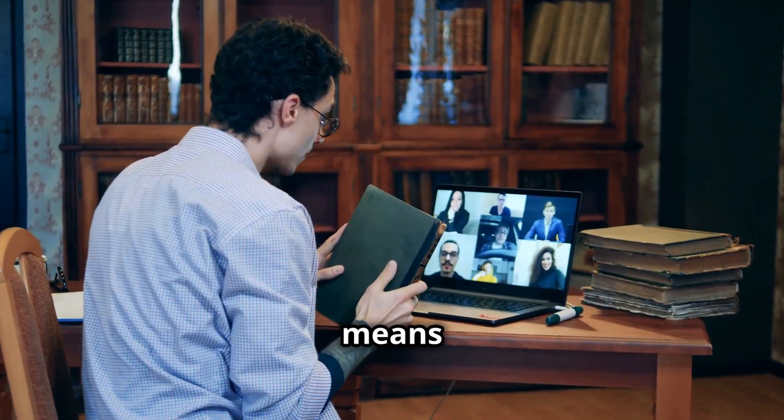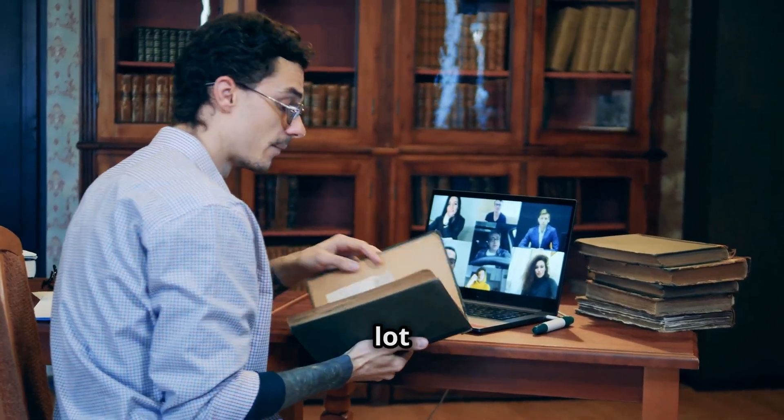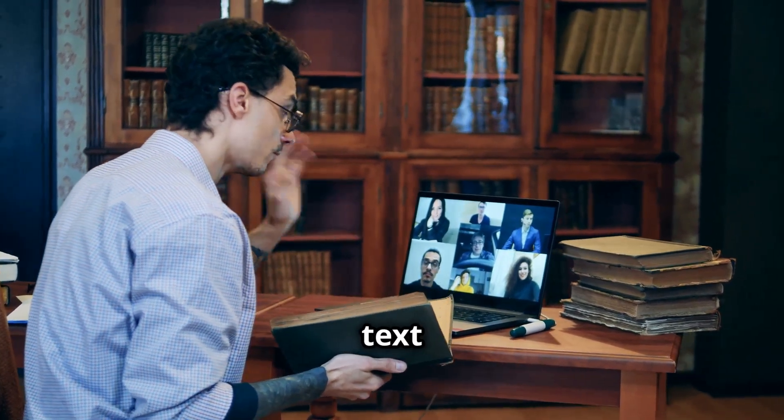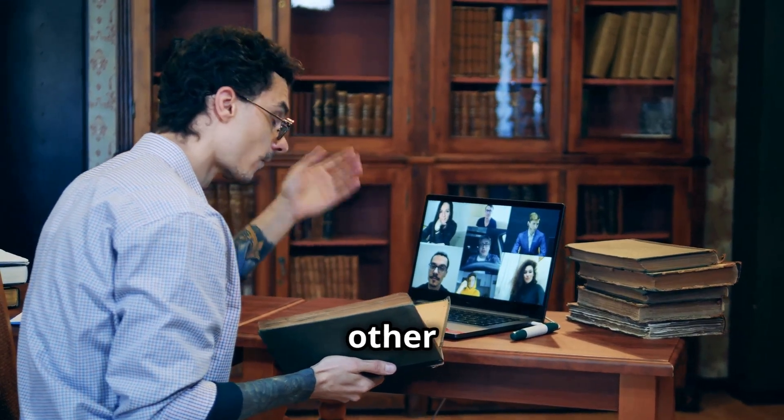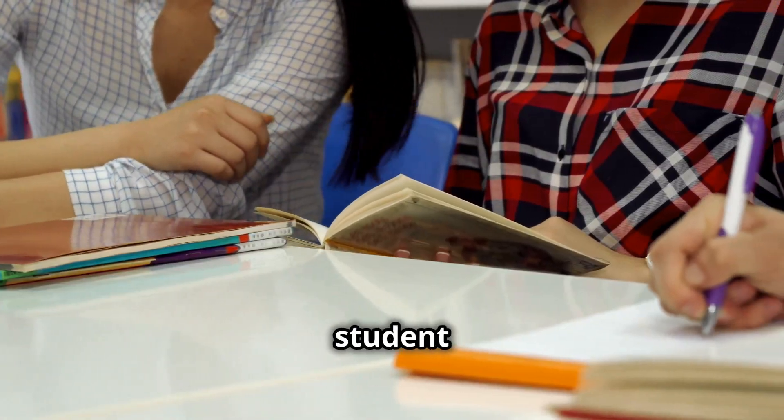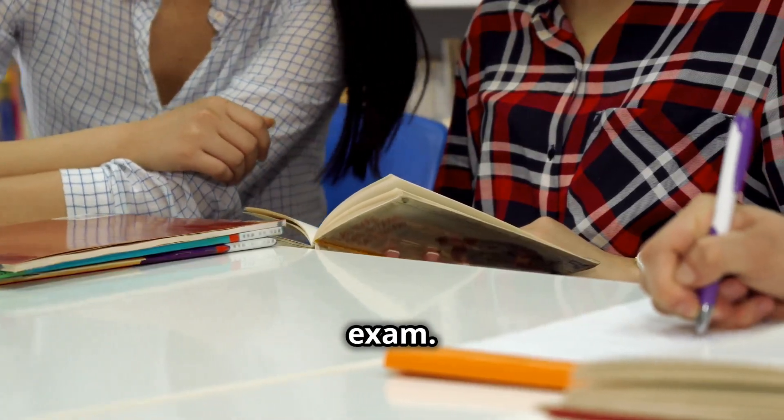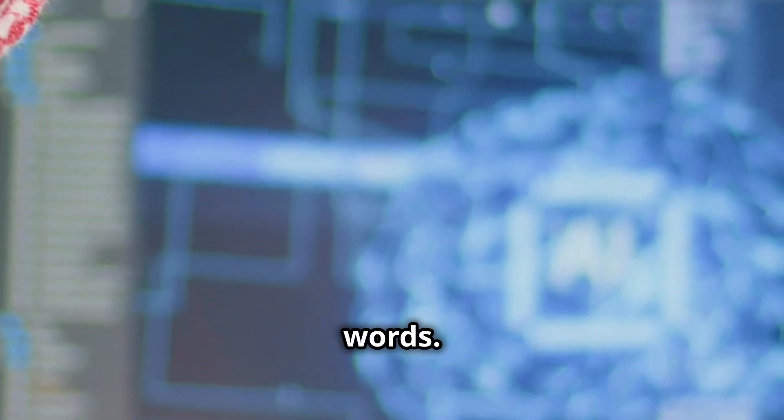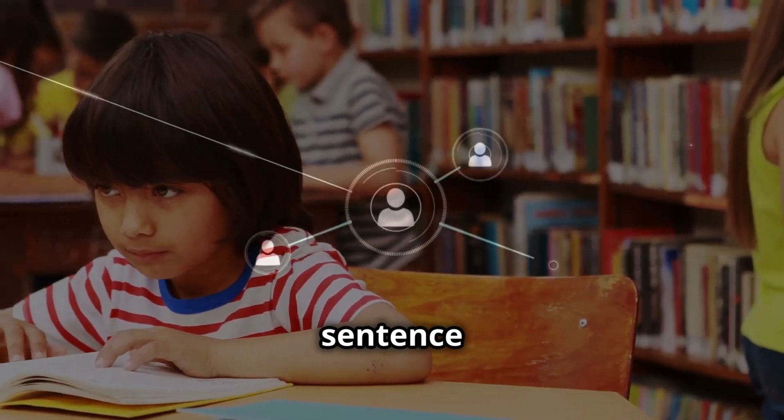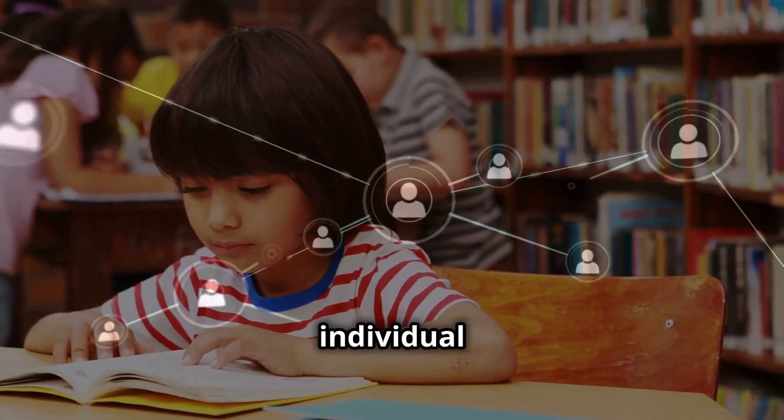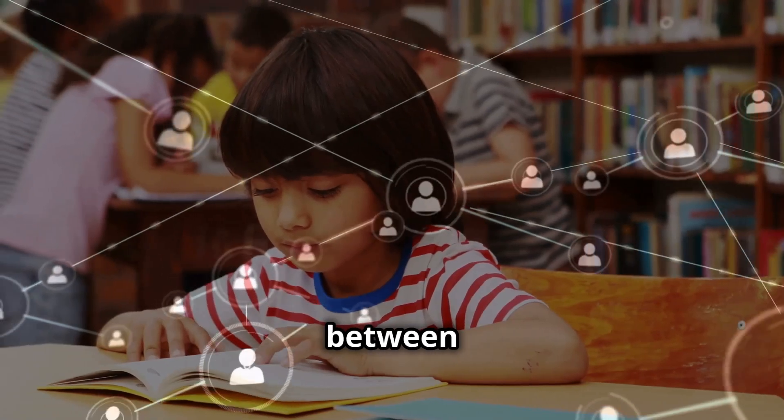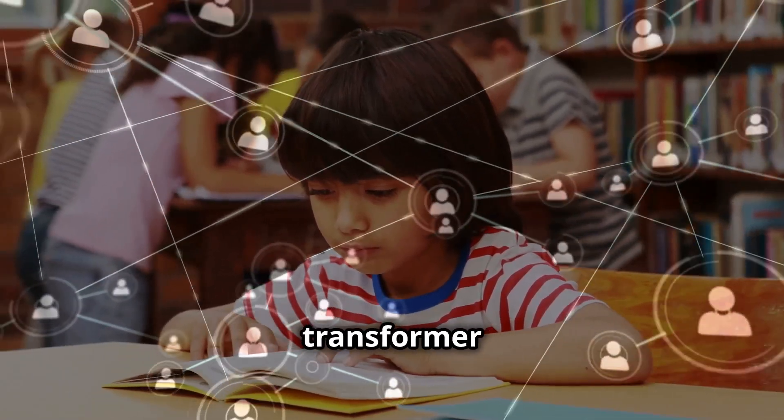Two, pre-trained means ChatGPT has already learned a lot by analyzing massive amounts of text from books, websites, and other sources. It's like a student who has studied hard before taking an exam. Three, transformer means the underlying architecture of ChatGPT, which allows it to process text in a way that captures relationships between words. Imagine reading a sentence where you not only understand individual words, but also the connections between them. That's what the Transformer model does.